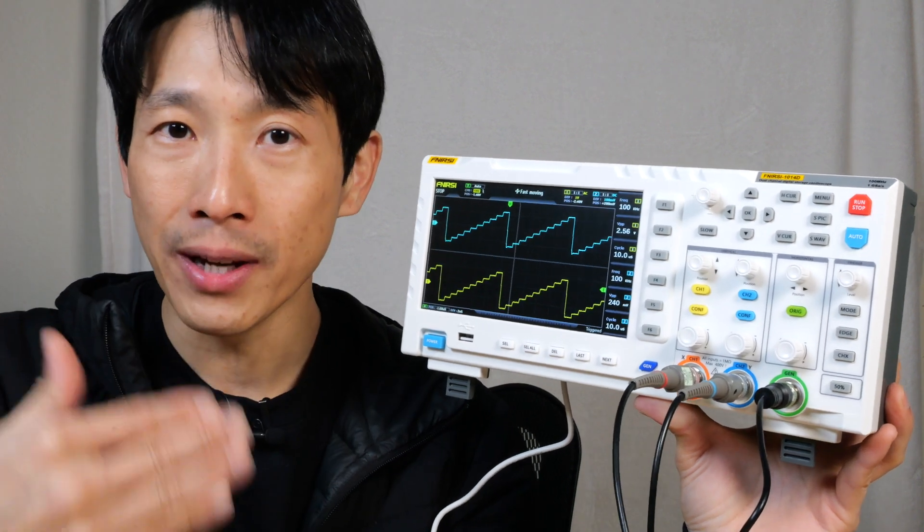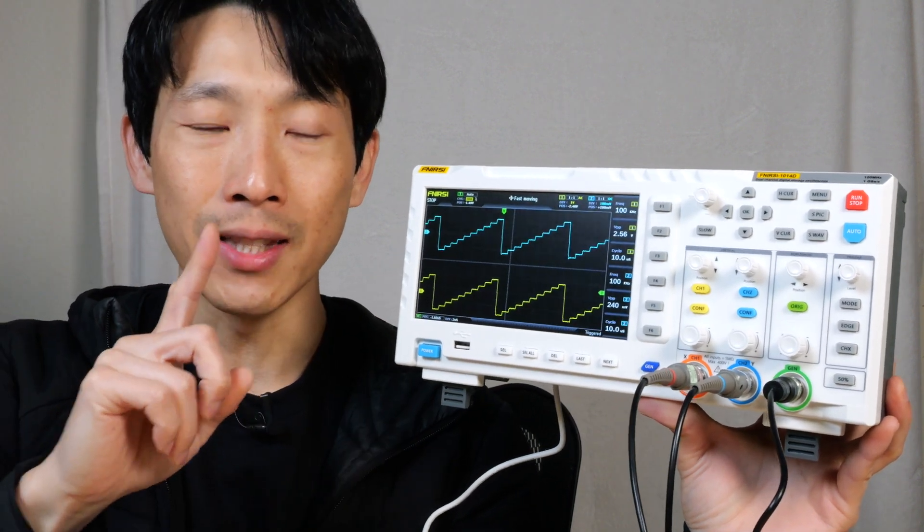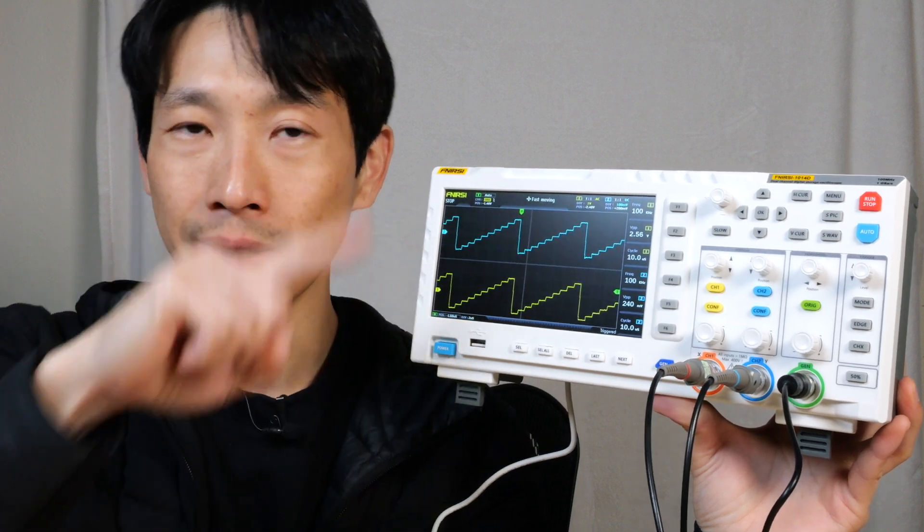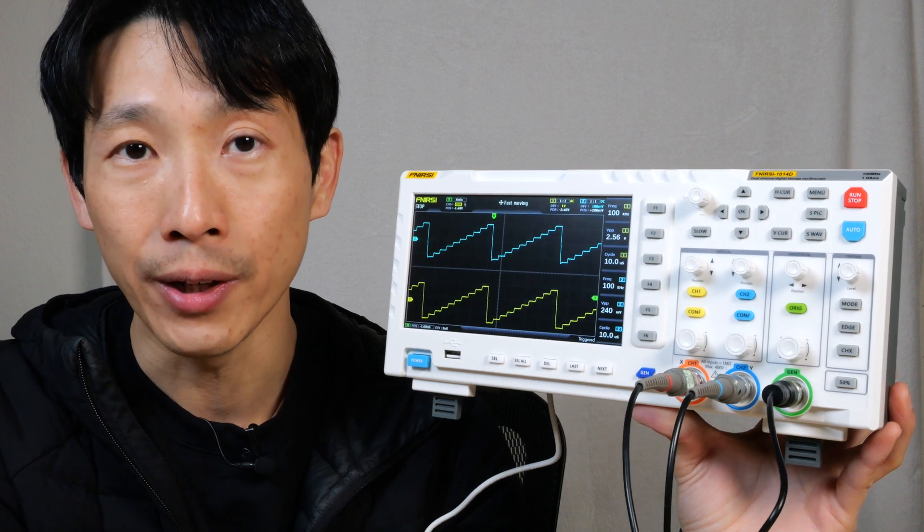In other words, if you measure something that's 100MHz, one single wave, it's going to have 10 data points on this wave. But that's enough detail to show you what that wave would look like, even at 100MHz.